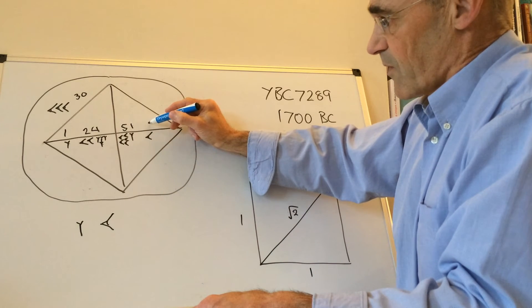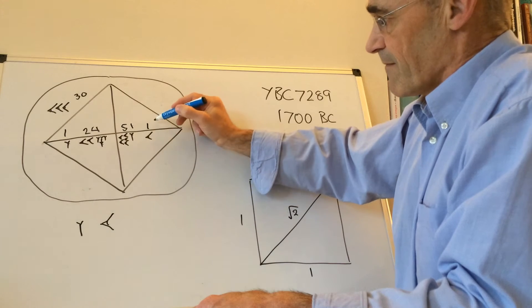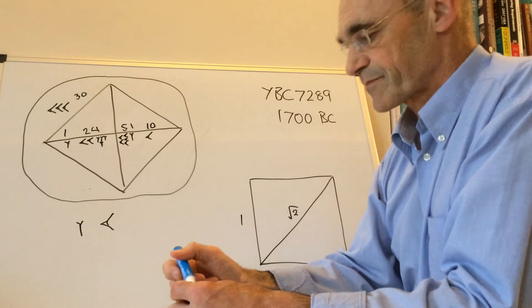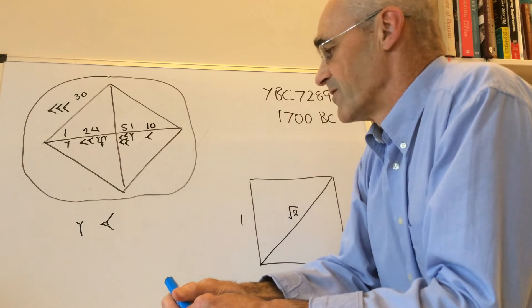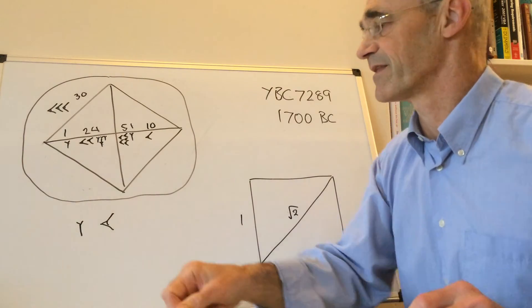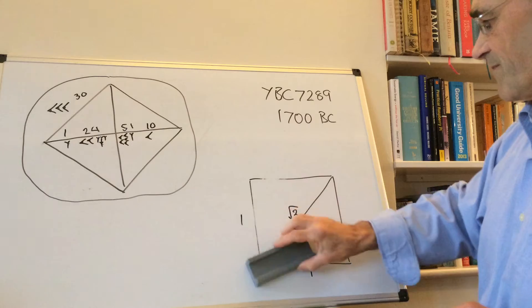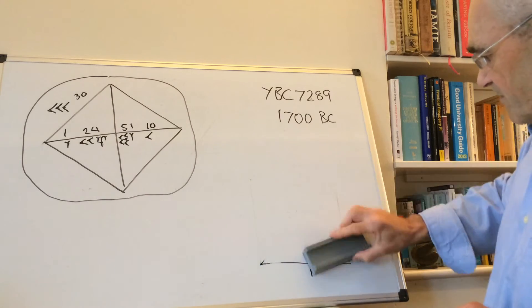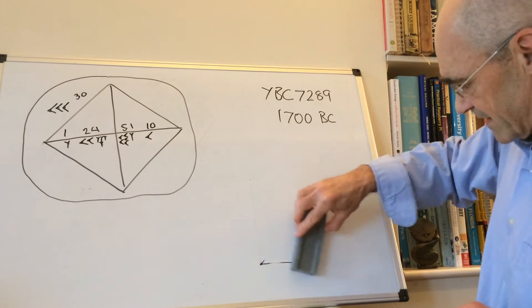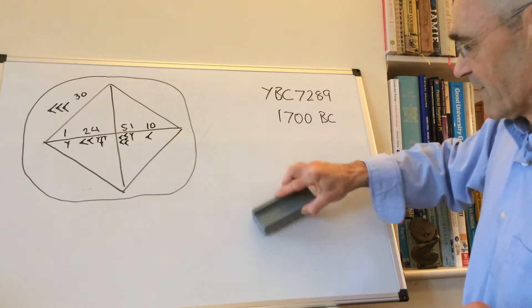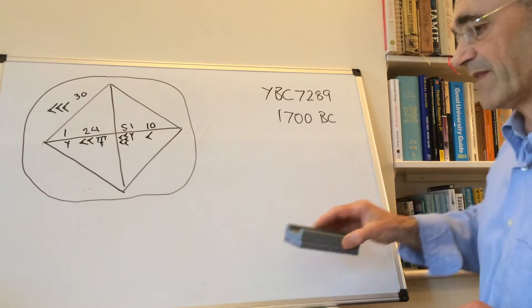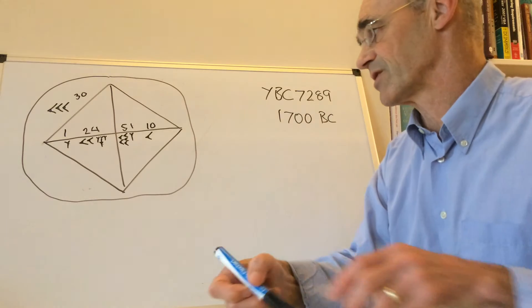The base 60 number that represents, well, there's a problem now. Let me rub this out to make a bit of space. The problem is that they didn't have a decimal point, so we can't tell what's a whole number and what's a fractional part.